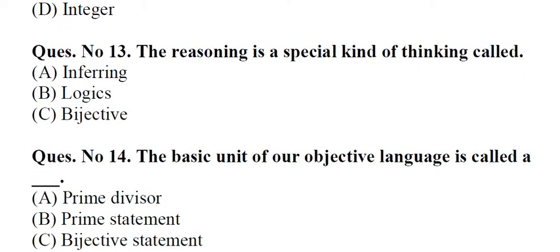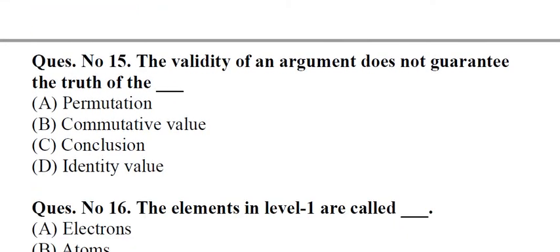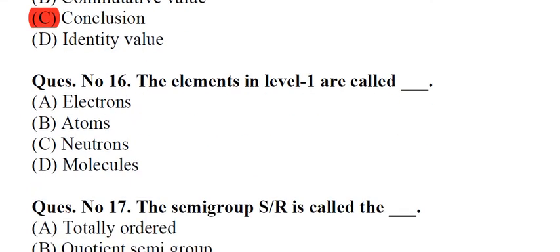Question number 13: The reasoning is a special kind of thinking called A. Inferring, B. Logics, C. Objective, D. Contradictive. Question number 14: The basic unit of our objective language is called a underscore. A. Prime divisor, B. Prime statement, C. Objective statement, D. Statement. Answer: B, Prime statement. Question number 15: The validity of an argument does not guarantee the truth of the underscore. A. Permutation, B. Commutative value, C. Conclusion, D. Identity value. Answer: C, Conclusion.